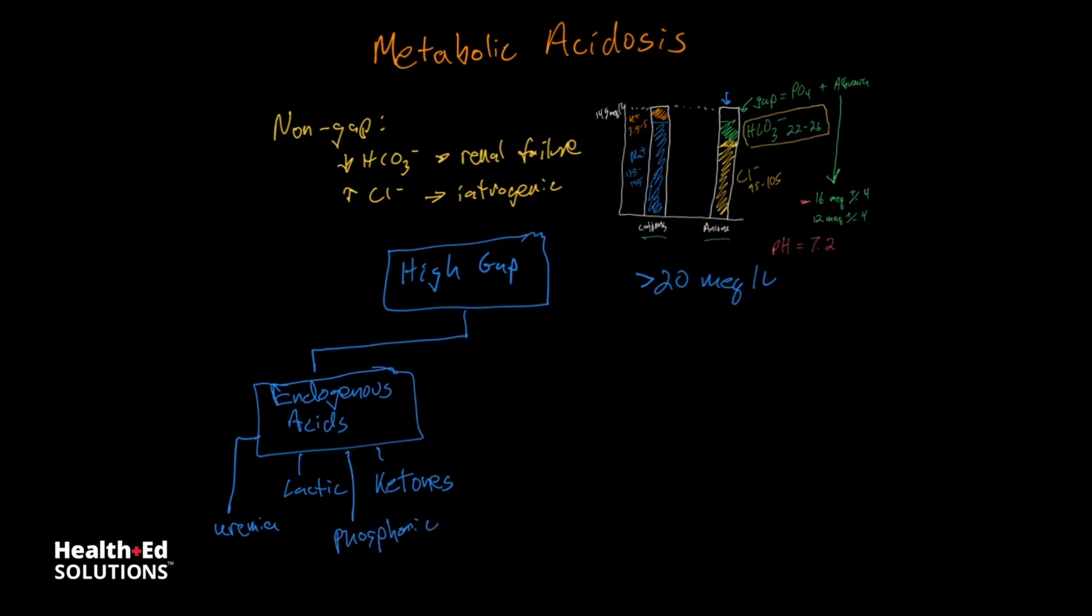Now, the other type of high gap is going to be exogenous acids, and these are basically toxins or overdoses. For example, methanol poisoning, salicylate overdose, ethylene glycol, and some other poisons like toluene from sniffing glue.